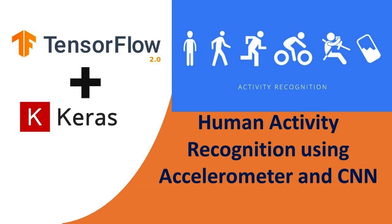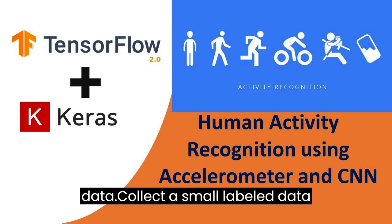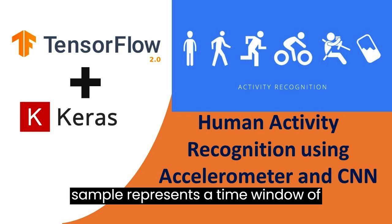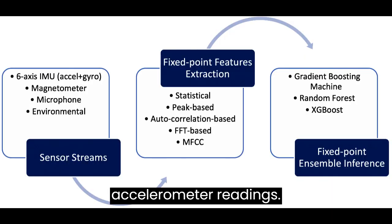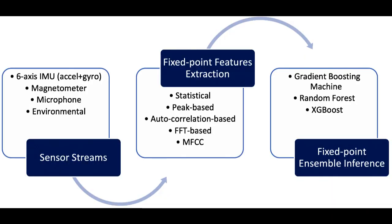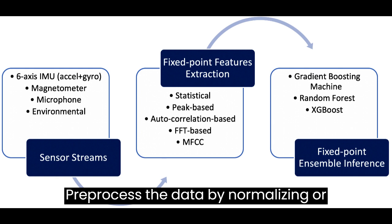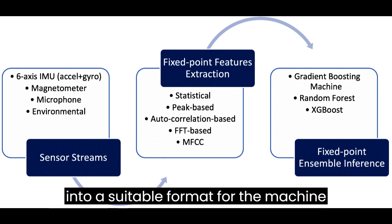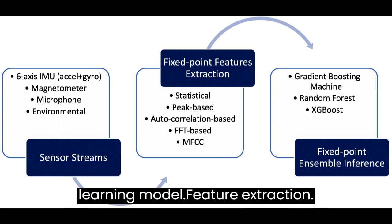Collect and pre-process the data. Collect a small labeled dataset of accelerometer data, where each sample represents a time window of accelerometer readings. Pre-process the data by normalizing or scaling the readings and converting them into a suitable format for the machine learning model.